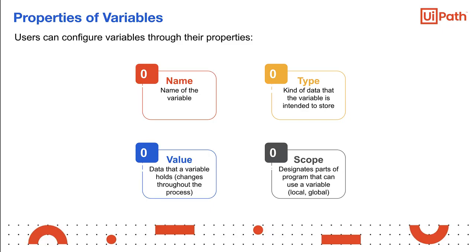Second, type defines the kind of data that the variable is intended to store. The type is declared when the variable is created. There are some specific types that are more generic and can accommodate different types of data. The most common or universal types of a variable are text, number, array, date or time, boolean, and data tables.